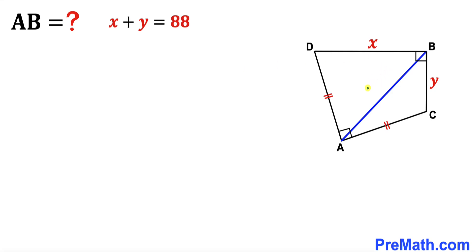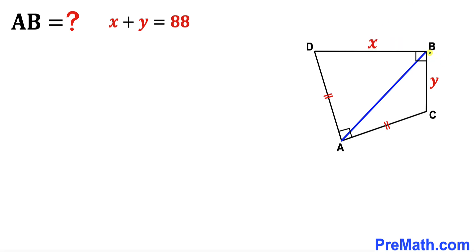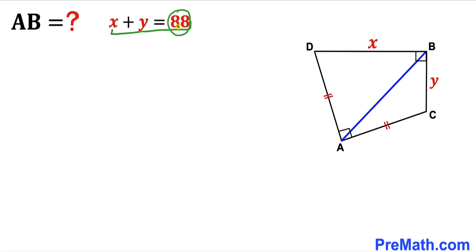In this video we have a quadrilateral ACBD such that segment AC equals segment AD, while side length BD is represented by X, side length BC is represented by Y, and the angles at C and B are both 90 degrees. AB is the diagonal, and furthermore X plus Y equals 88 units. Our task is to find the length of diagonal AB.